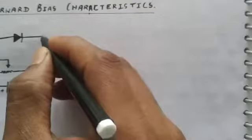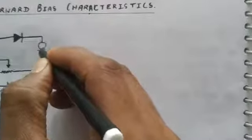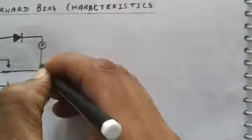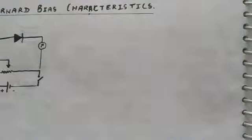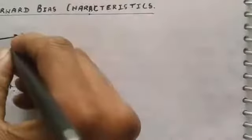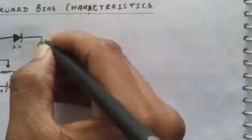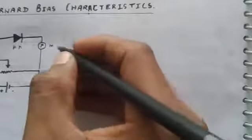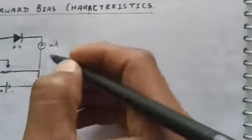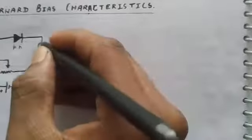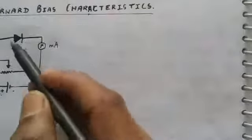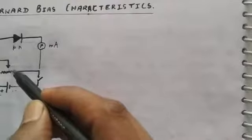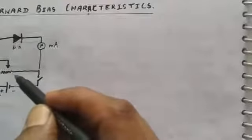We have also connected an ammeter to this PN diode. To measure small values, we use a milliammeter, because forward bias current is always in the milliampere range — it is a small current. We have connected the positive to the P side and negative to the N side. We can vary this voltage using the variable resistance, which is why the arrow symbol is drawn — it represents a voltage divider, which we can also call a potentiometer.